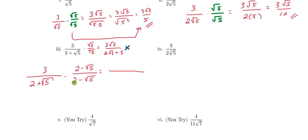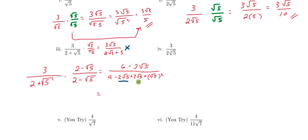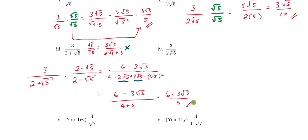When we foil (2 + √5)(2 − √5), we get 2 times 2 equals 4, then minus 2√5, plus 2√5 — those cancel — and finally the square root of 5 squared equals 5. In the numerator we end up with 6 minus 3 square root of 5. The outer and inner terms add out, which is exactly why we multiply by the conjugate. So we're left with (6 − 3√5) all over (4 + 5), which simplifies to (6 − 3√5) over 9.